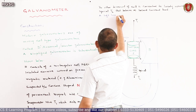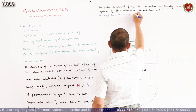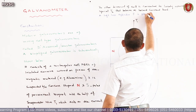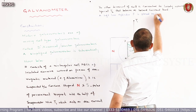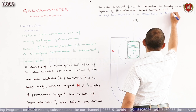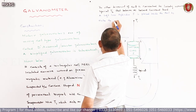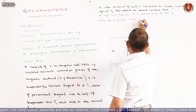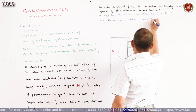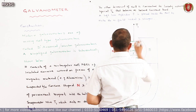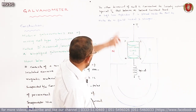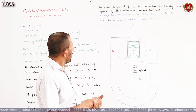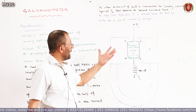A soft iron cylinder F is placed inside the coil to make the magnetic field radial and stronger.